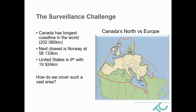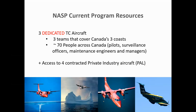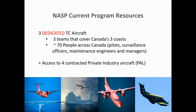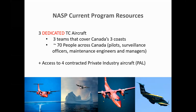Let's start with the challenge of conducting maritime surveillance in a country with the longest coastline in the world — 202,000 kilometers. For comparison, you can see Europe covers only a portion of the northern part of Canada, let alone the southern part of the country. We currently have three dedicated aircraft with three teams covering the three coasts: two twin-engine Dash-8s and one four-engine Dash-7 for Arctic operations, all equipped with the same surveillance system. There are approximately 70 personnel, including pilots, aircraft maintenance engineers, surveillance officers, and program management. We also have access to private contractors that fly some pollution hours for us — PAL.